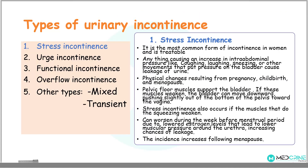So what are the types of urinary incontinence? We have five types: stress incontinence, urge incontinence, functional incontinence, overflow incontinence, and mixed types of incontinence.